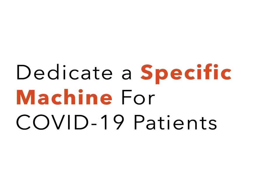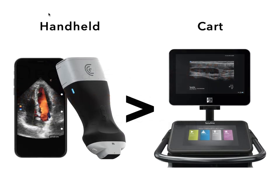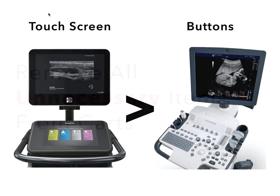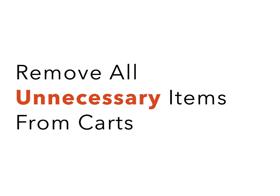If your department has the ability, think about designating a machine or machines as COVID-specific. Handheld devices should preferentially be used over a cart-based machine, as handhelds can be completely encased in a cover, are easier to clean, and don't have a cooling fan. If you're using a cart-based ultrasound, use one with a touch screen instead of one with multiple knobs and buttons — viral particles could find their way into all the crevices of the machine during aerosol-generating procedures. Remove all unnecessary items from the cart, like printers, baskets, and extraneous cords. It's ideal to scan these patients using the machine's battery power rather than plugging into a wall outlet.